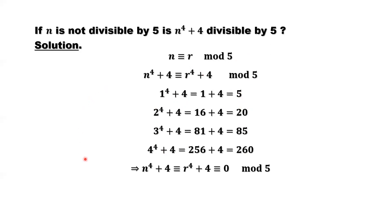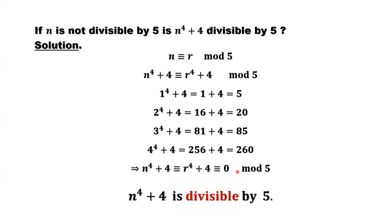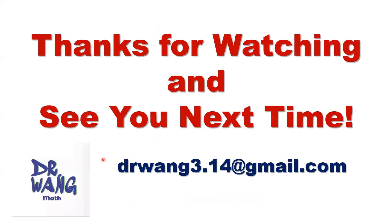Here is our conclusion: N to the power of 4 plus 4 is divisible by 5, because r to the power of 4 plus 4 is divisible by 5 for all possible r — r equals 1, 2, 3, 4. That's all. Thanks for watching and see you next time.